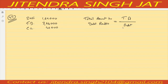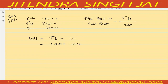Debt means long term debt. How do we calculate long term debt when total debt is given? We subtract current liability from total debt: total debt minus current liability gives long term debt. So 3 lakh 60,000 minus current liability 40,000 gives long term debt of 3 lakh 20,000.